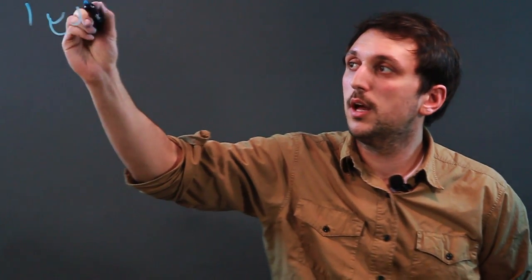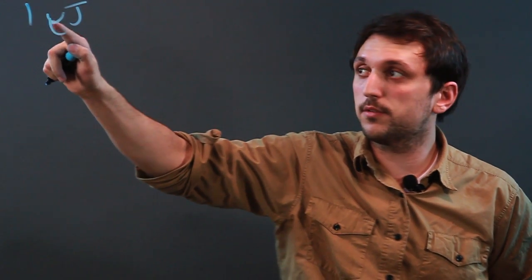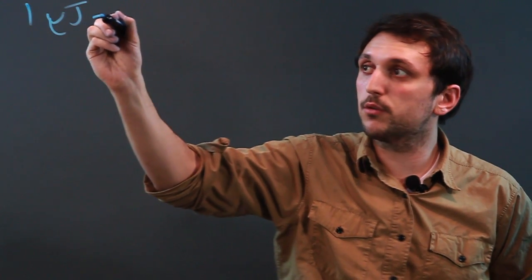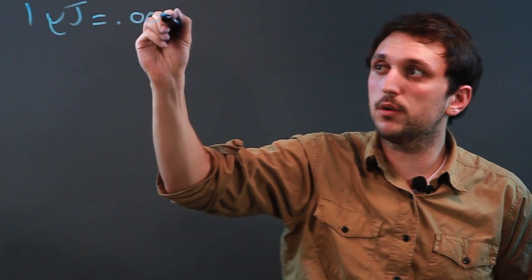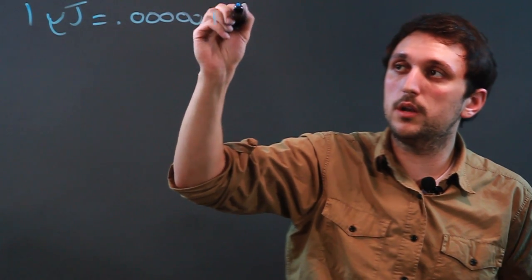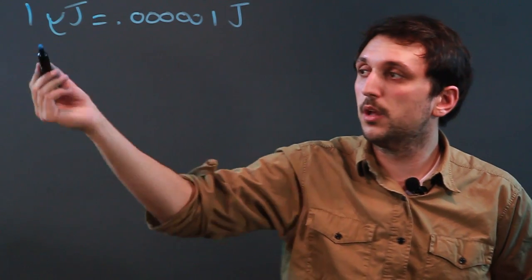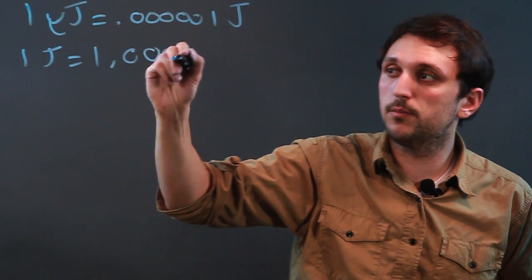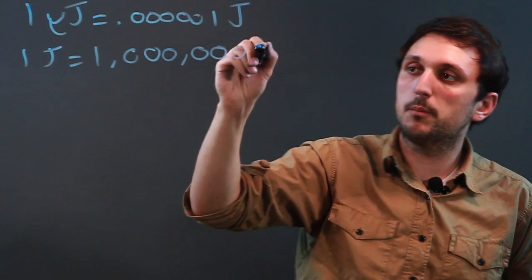Now, one microjoule, as part of the metric system, this is the symbol for micro, and micro means one millionth. So one microjoule equals .00001 joule, or one millionth of a joule. One joule equals one million microjoules.